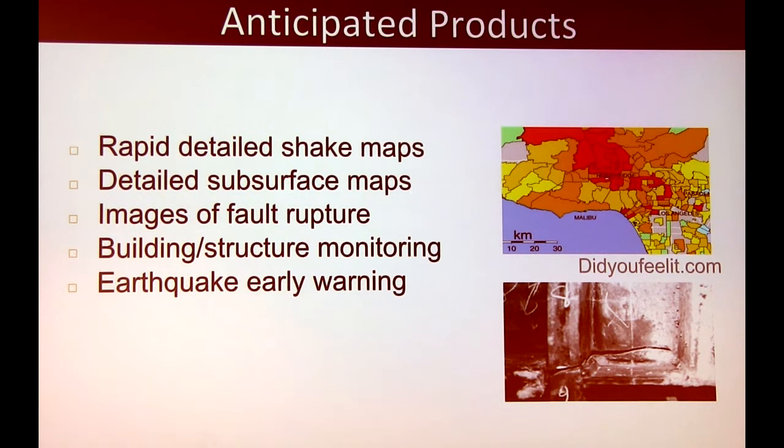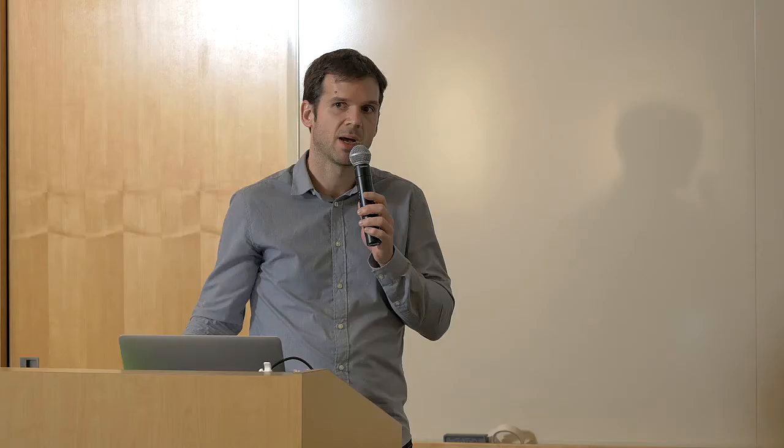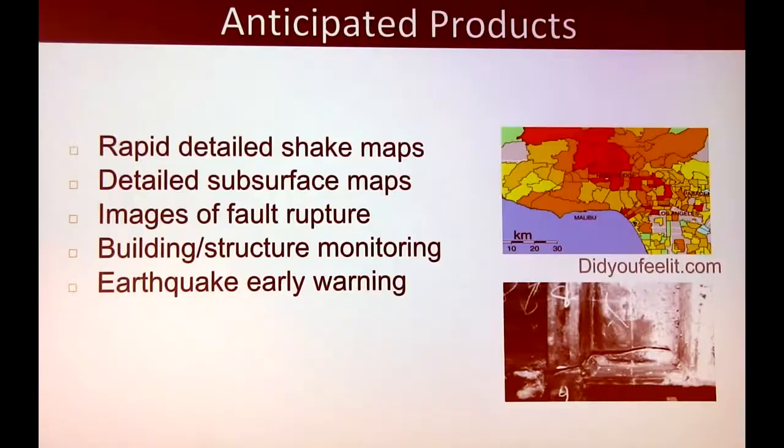From these dense networks we hope to generate rapid detailed shake maps at a level not possible with sparse sensors, subsurface maps showing where shaking differs based on subsurface structures, possible imaging of fault ruptures based on wave propagation, building and structure monitoring by deploying sensors throughout buildings, and earthquake early warning by delivering alerts to people not near the epicenter.